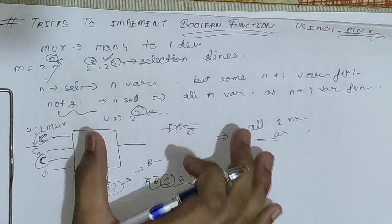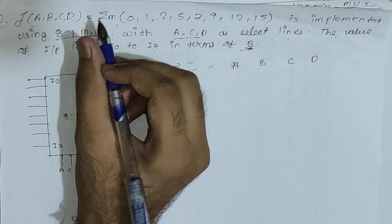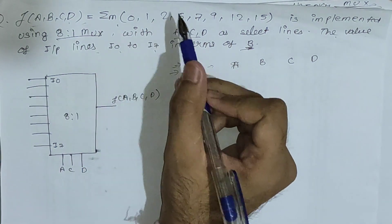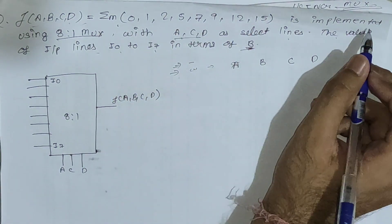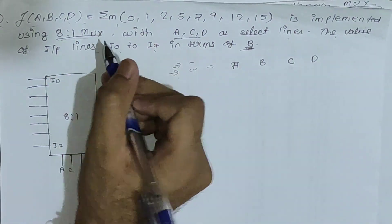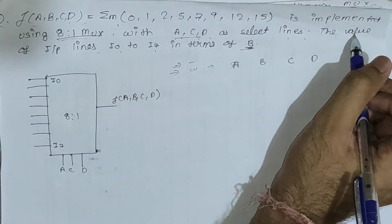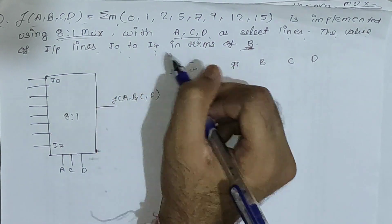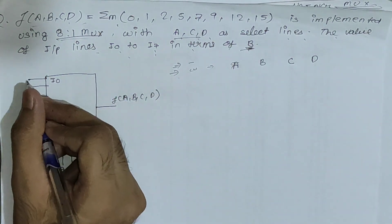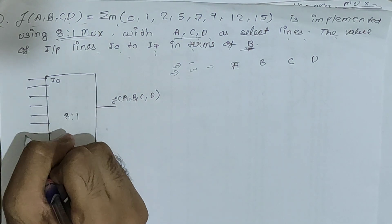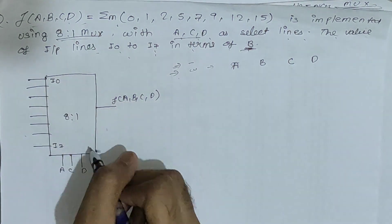Now we will see this with one example. The function F(a, b, c, d) = Σm(0, 1, 2, 5, 7, 9, 12, 15) is to be implemented using an 8-to-1 mux with a, c, d as selection lines. We need to find the values of input lines i0 to i7 in terms of b.